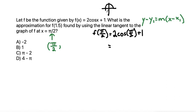Cosine of pi over 2 is equal to 0, and we can do that by using the unit circle. Pi over 2 is here, and the coordinate there is 0, 1. The cosine of an angle is the x coordinate, so that makes it 0. That would be 2 times 0 plus 1, which simplifies to 1. So our coordinate that we're using for our point slope form is pi over 2 comma 1.